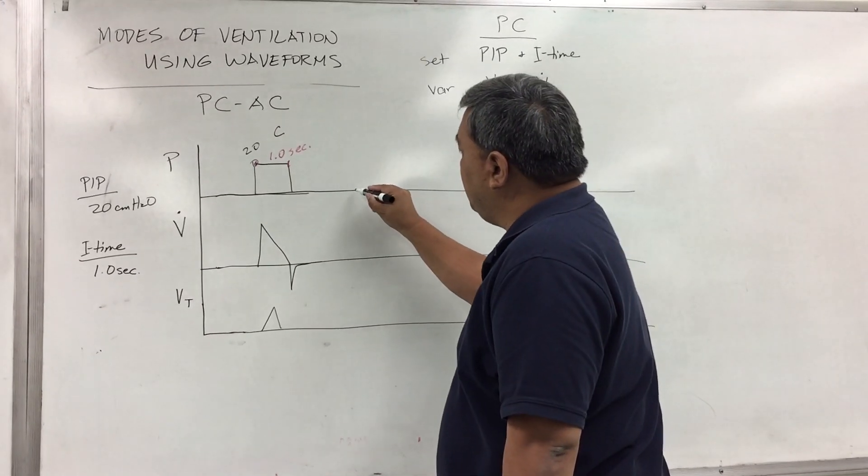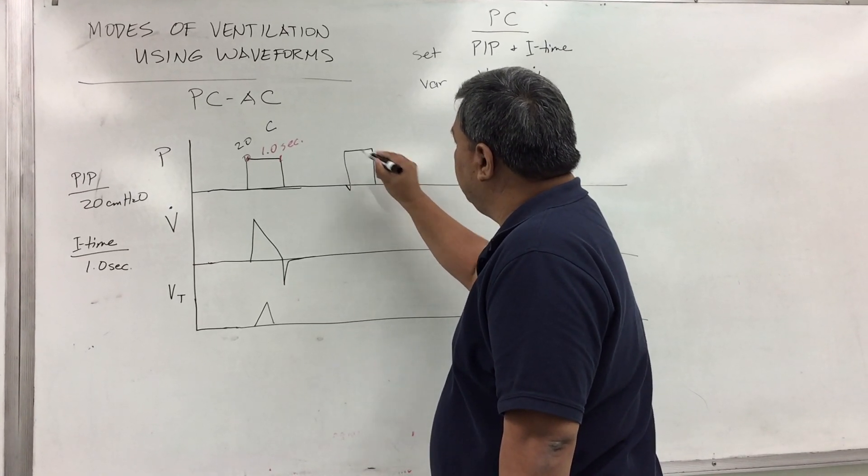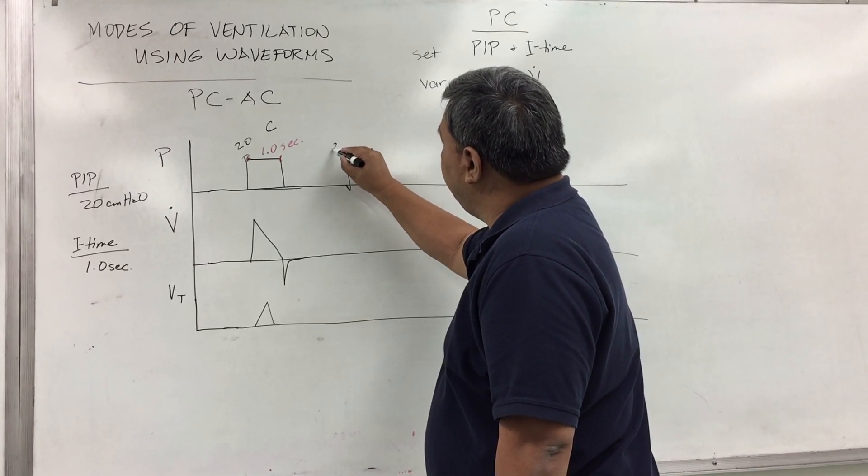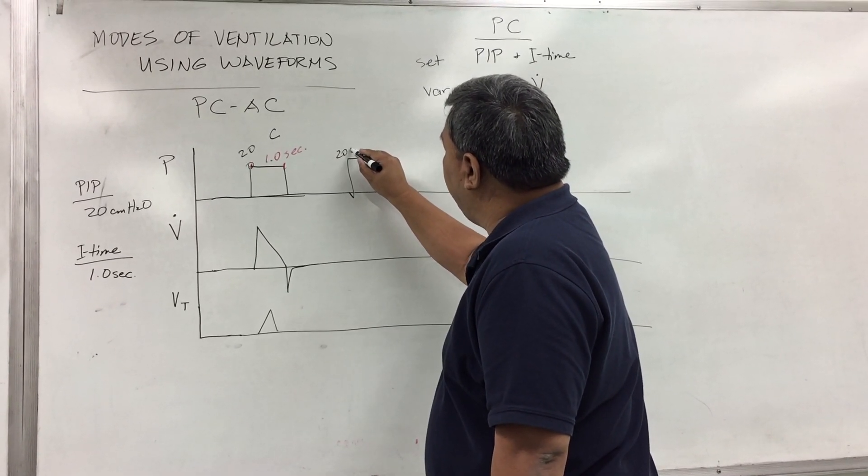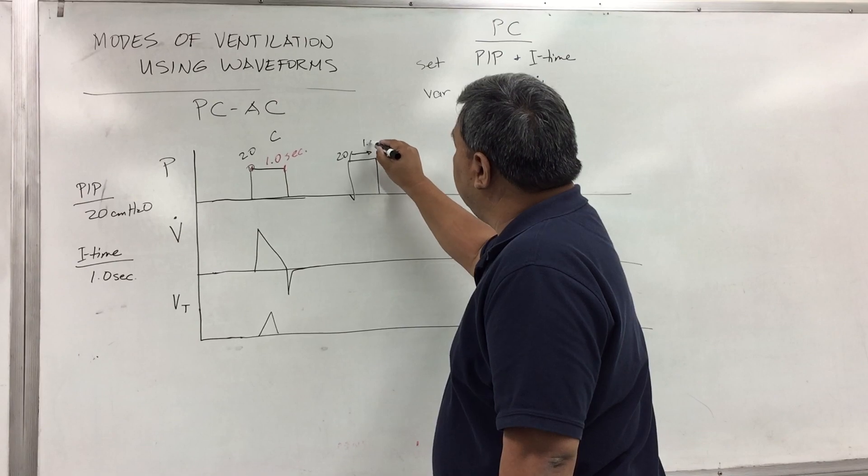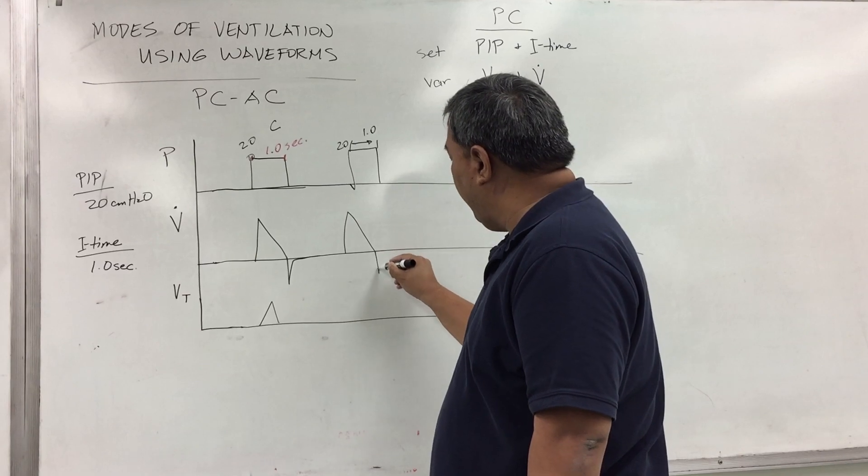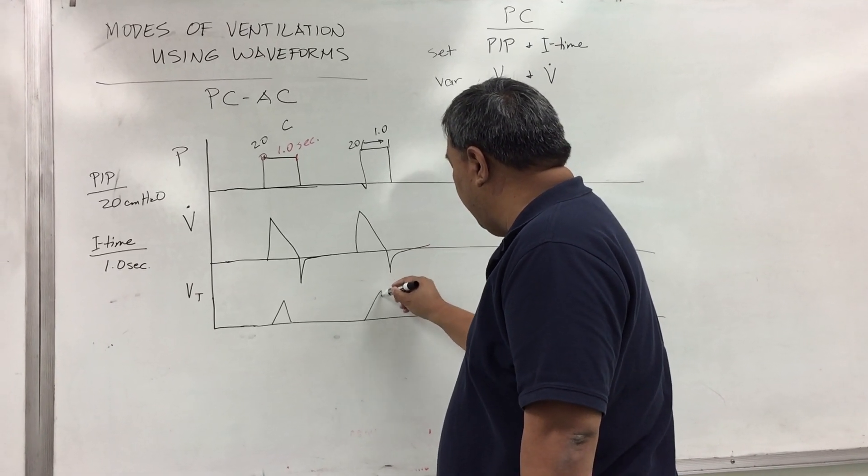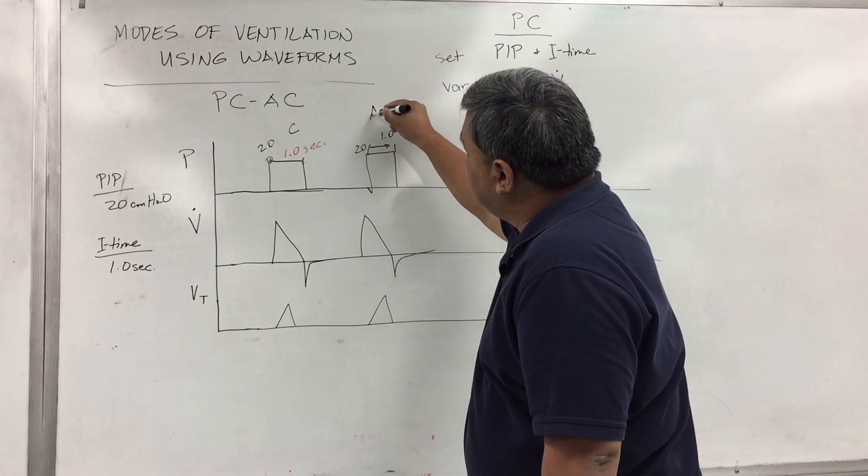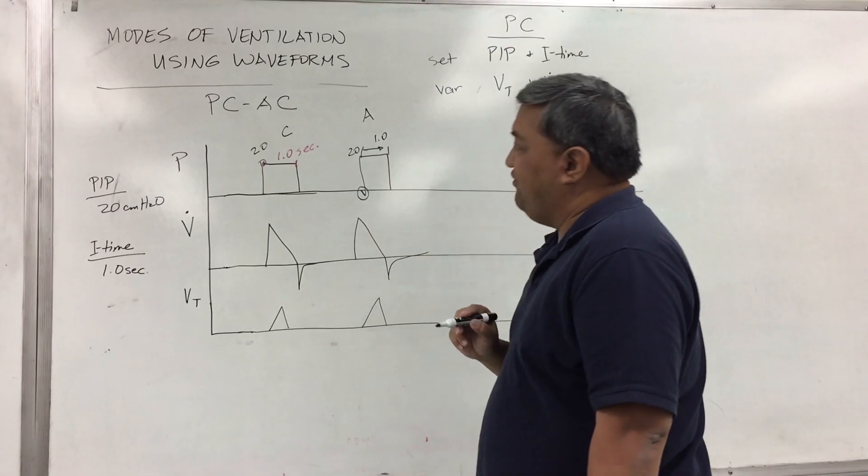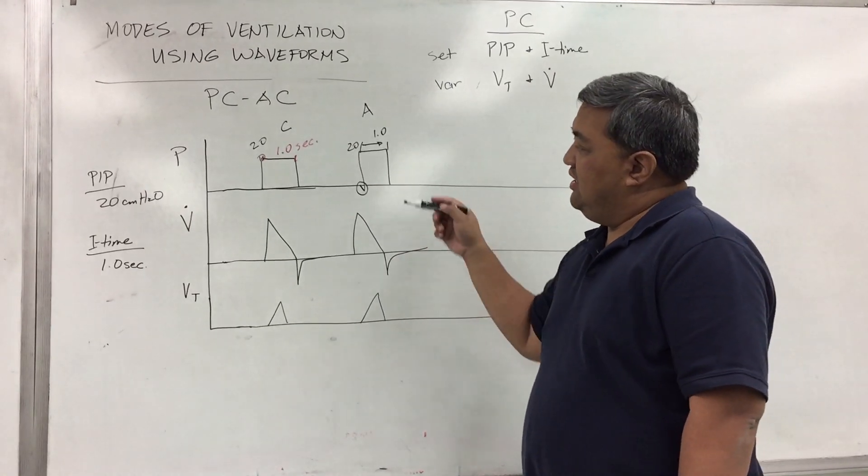An assisted breath will have that negative inflection. Again, this is 20, and the time frame here is 1.0 seconds. Your flow waveform is descending or a ramp, and then you'll have your given volume. This is an assisted breath because of the negative inflection. Pressure Control AC is a combination of both a controlled breath and an assisted breath.